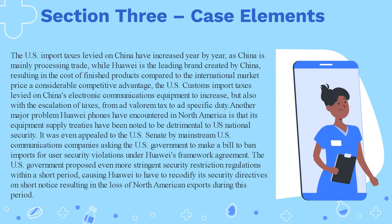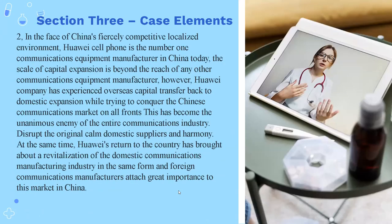Another major problem Huawei phones have encountered in North America is that its equipment supply treaties have been noted to be detrimental to U.S. national security. This was even appealed to the U.S. Senate by mainstream U.S. communications companies, asking the government to make a bill to ban imports for user security violations under Huawei's framework agreement. The U.S. government proposed even more stringent security restriction regulations, causing Huawei to re-codify its security directives on short notice, resulting in the loss of North American exports during this period.